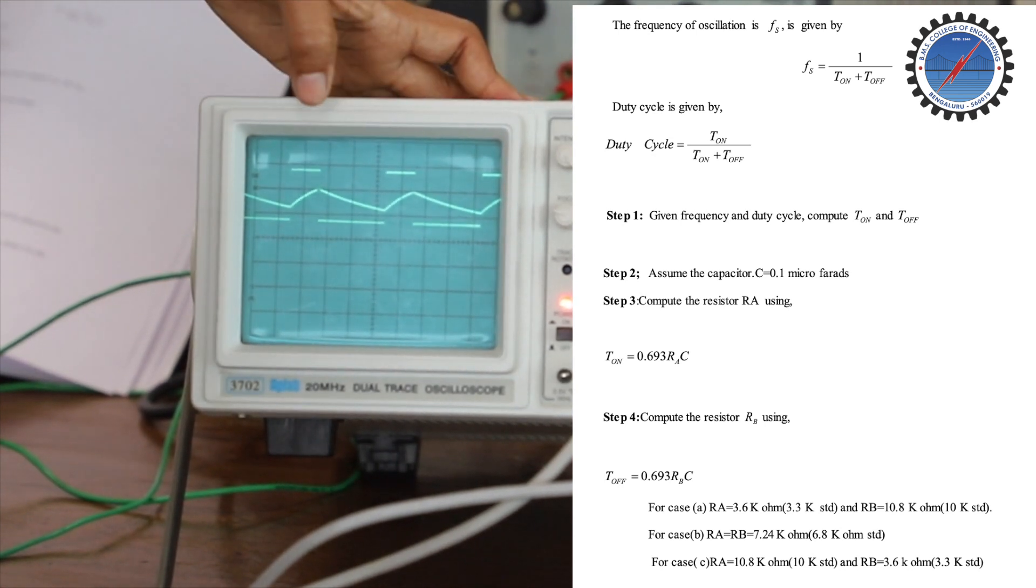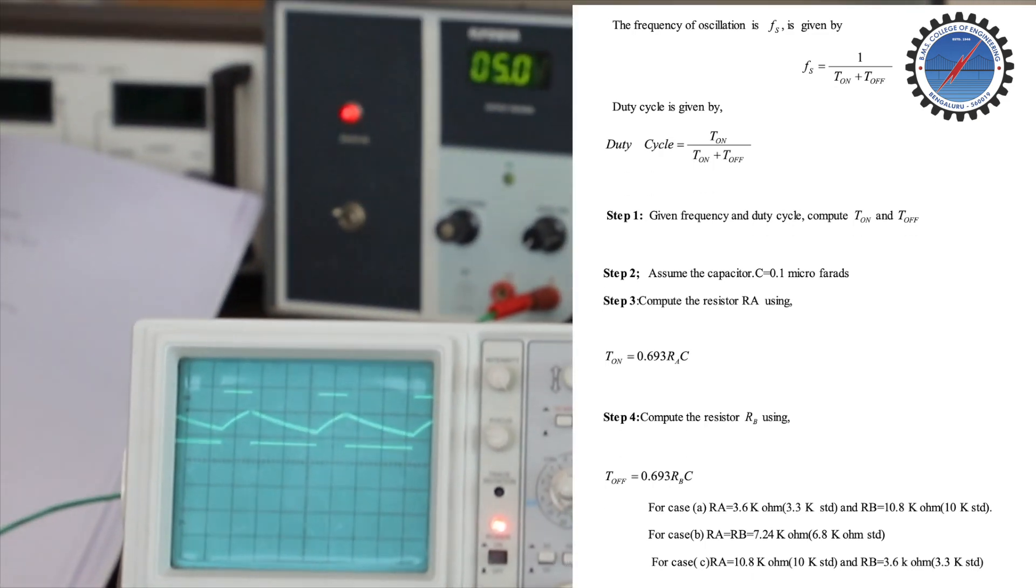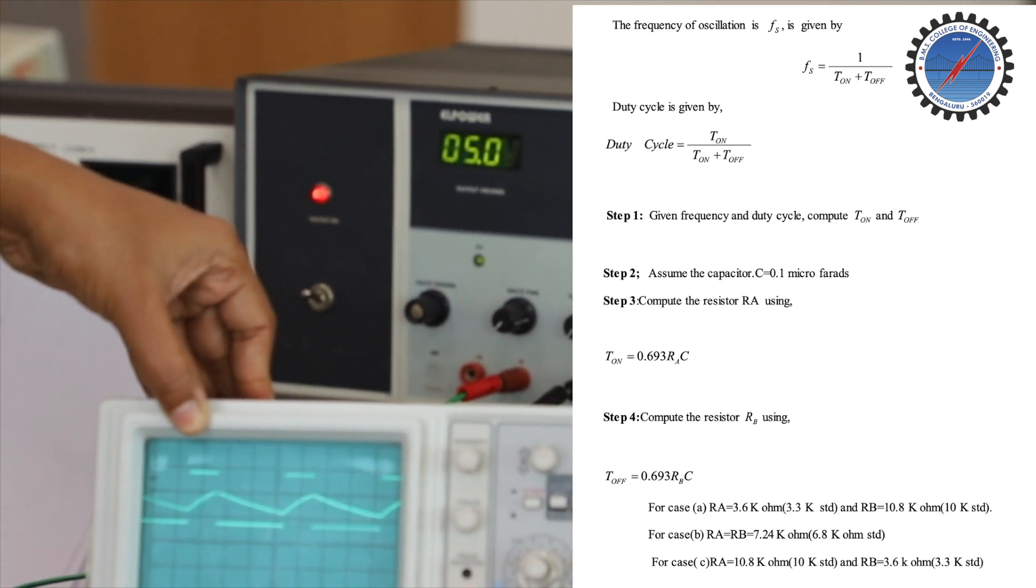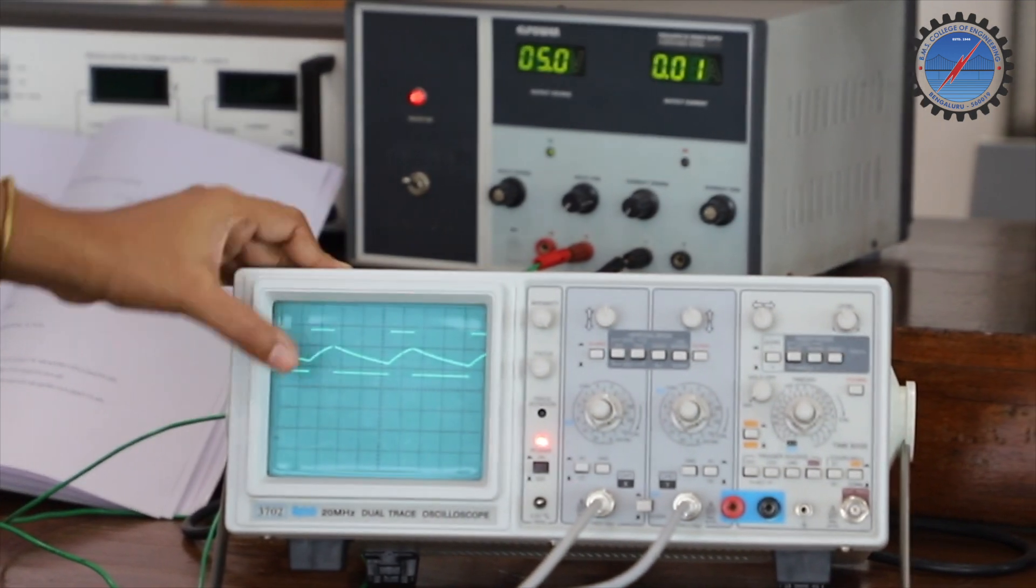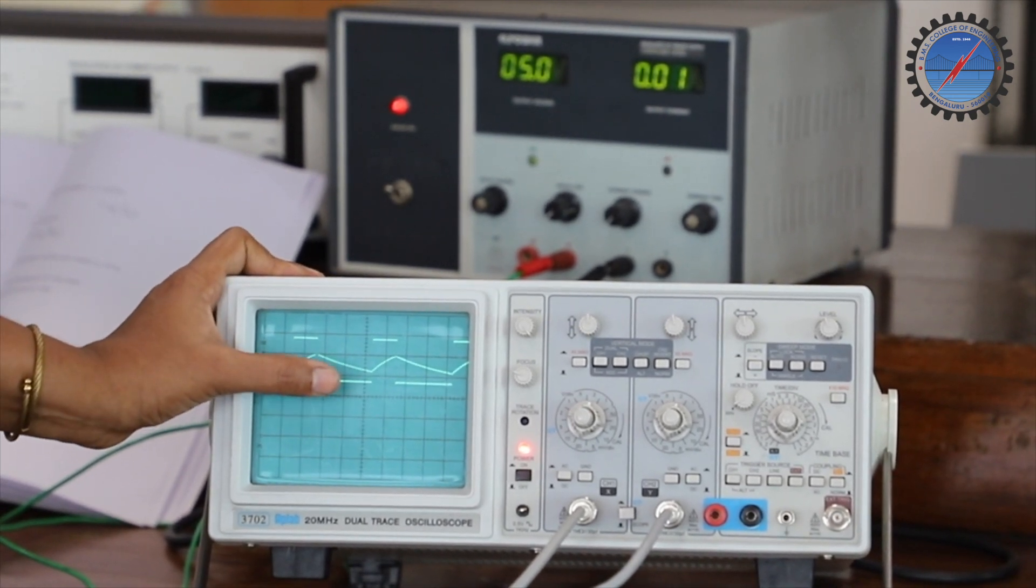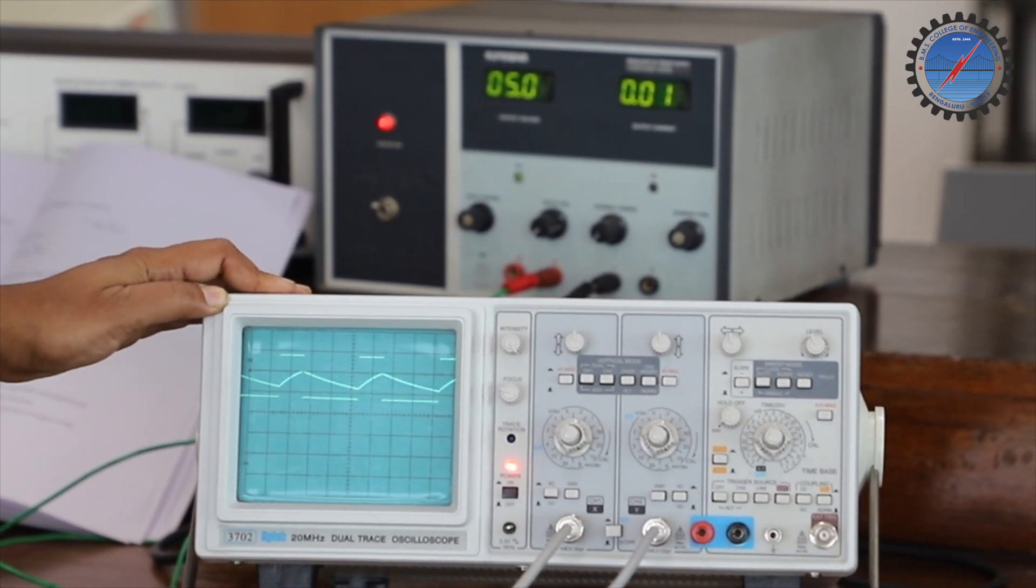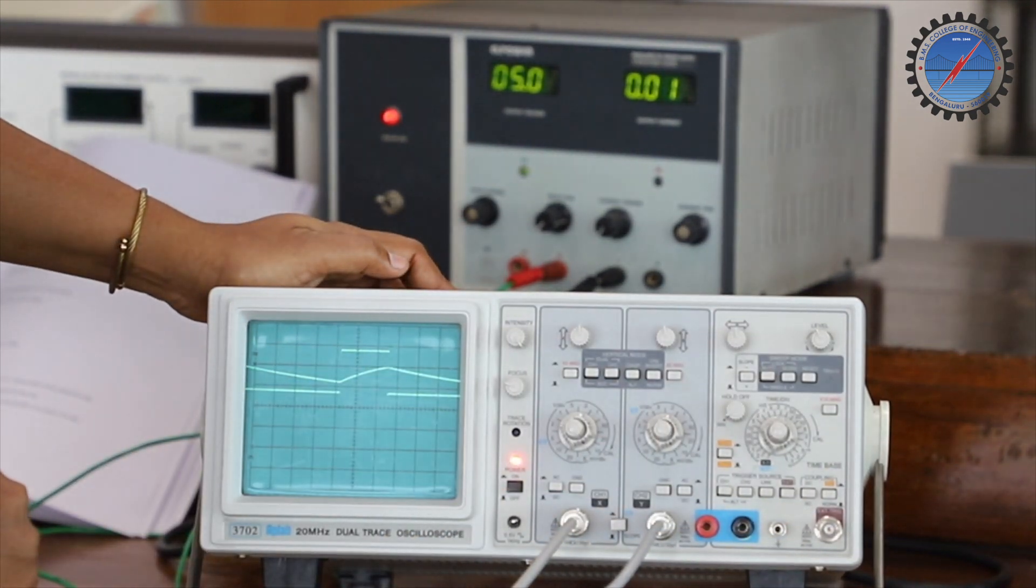Whenever charge across this capacitor reaches two-thirds of VCC—here VCC is plus 5 volts—the output changes from plus 5 volts to 0. Output remains at 0 until the capacitor charge reaches one-third of VCC. These two are important points when calculating output.